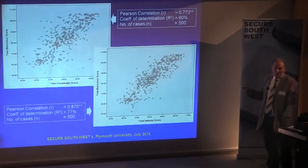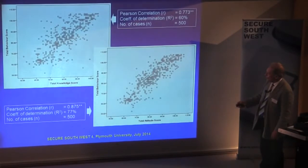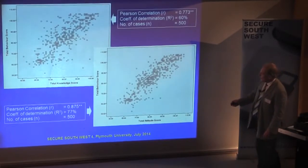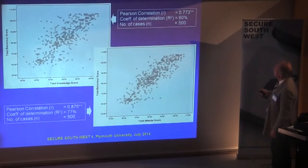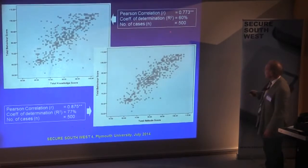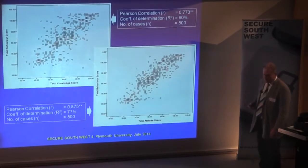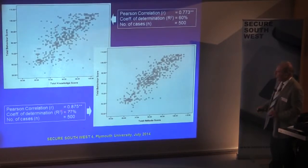The results of this survey: we've got total knowledge score across 500 people and total behaviour score. We can put a straight line through there — total knowledge helps to explain 60% of the total behaviour score. That's pretty good. This is highly significant with those double asterisks. For attitude versus behaviour — another straight line — attitude helps explain the total behaviour score at 77%. Not many others in the world can show with a thorough survey that there is a relationship between attitude and behaviour, measuring it by the Knowledge-Attitude-Behaviour model.